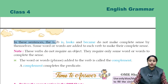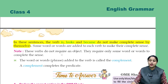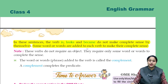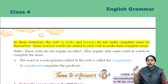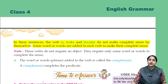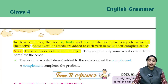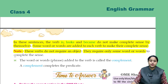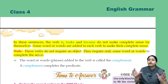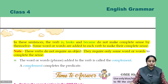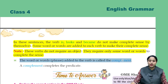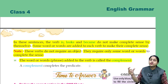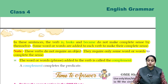In these sentences, the verbs 'is', 'looks', and 'become' do not make complete sense by themselves. Some word or words are added to each verb to make their complete sense. Note: these verbs do not require an object — they only require some word or words to complete the sense. The word or words added to the verb is called the complement. Those words we add with these verbs are called the complement.